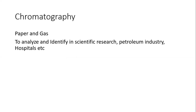Chromatography is used for the identification and separation of substances — specifically solutes from a solution. There are two types: paper chromatography and gas chromatography. It is used to analyze dyes and identify unknown substances. You place the sample on chromatography paper, add a solvent, and it separates the components. It is used in scientific research, the petroleum industry, and hospitals.